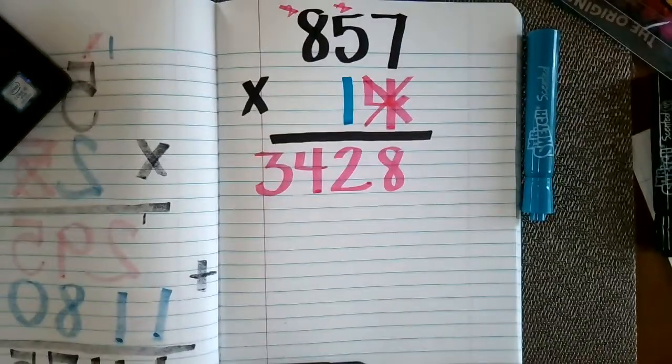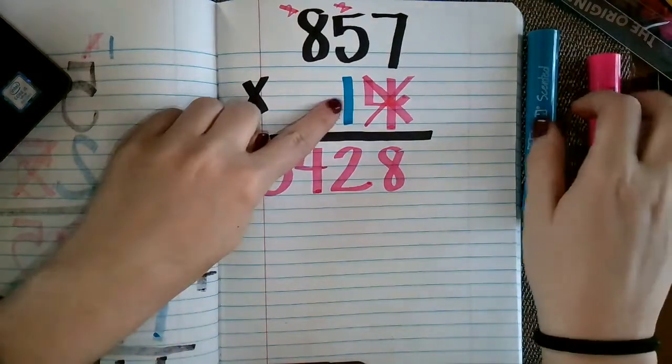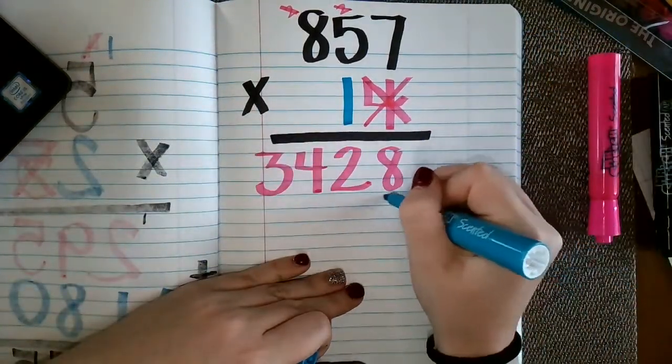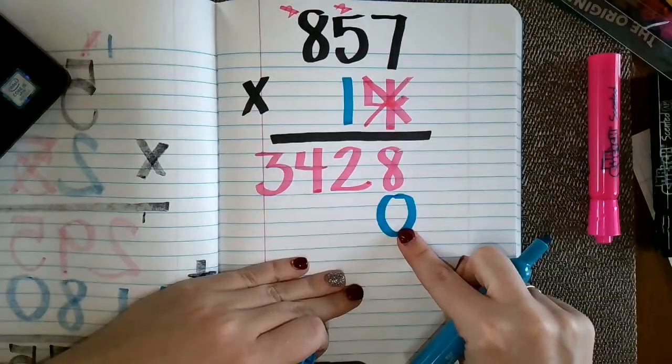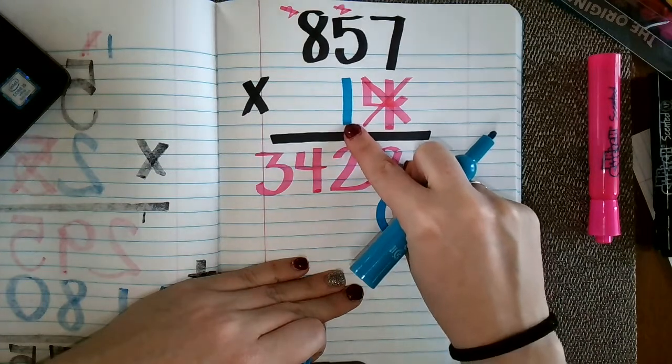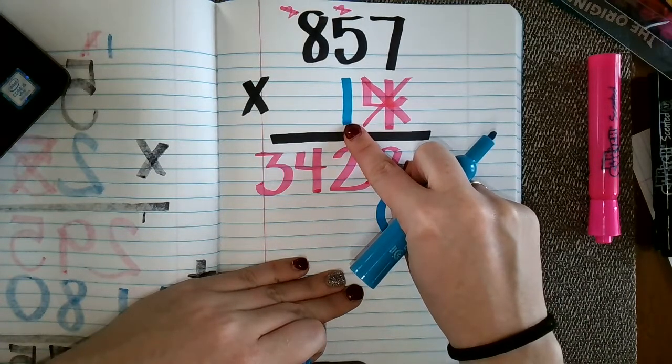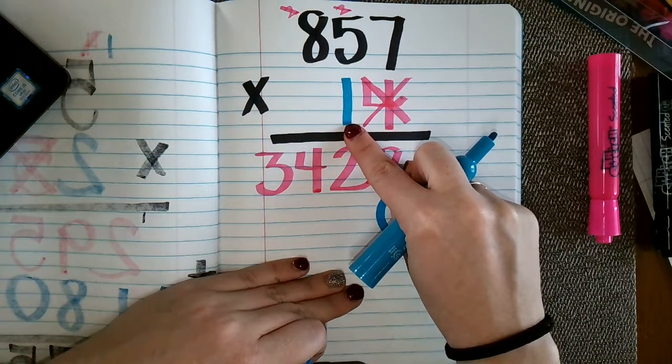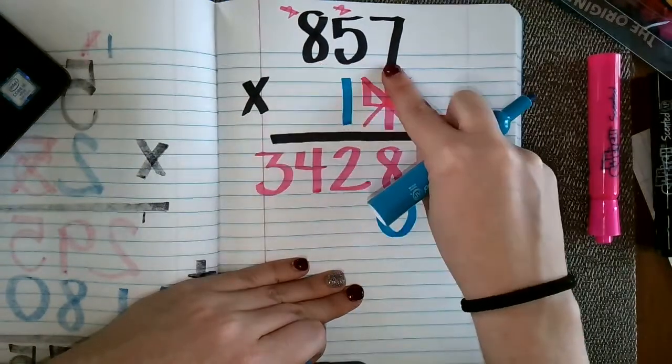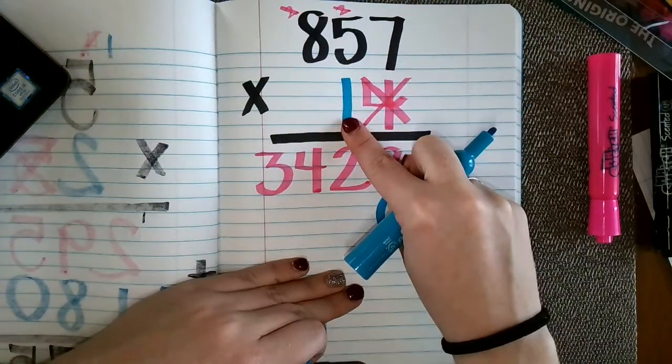And it's important that once we cross out that ones place and we move to our tens place here, that we have that zero placeholder. This is to show we aren't going to have anything else in our ones place. Because we need to look at this one, not as a one, but as a 10 because it is in the tens place. So in other words, we are going to take 857 times 10.